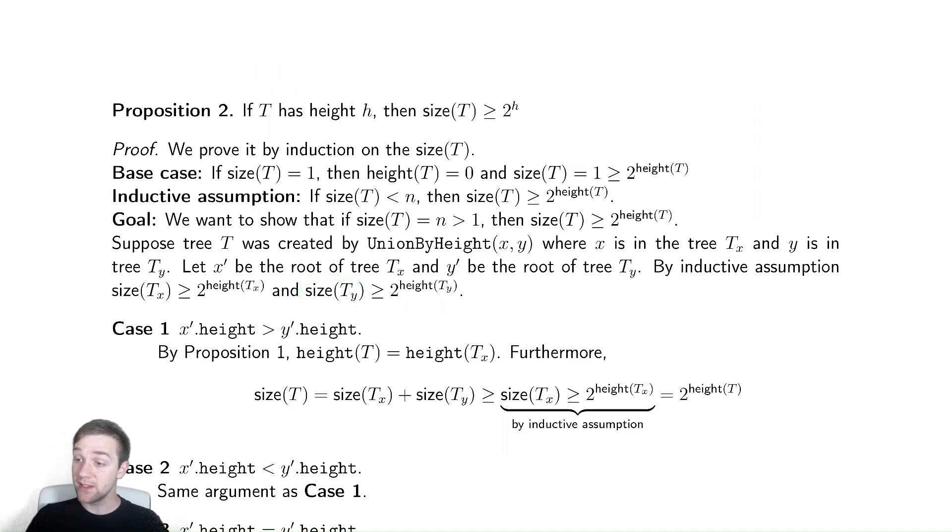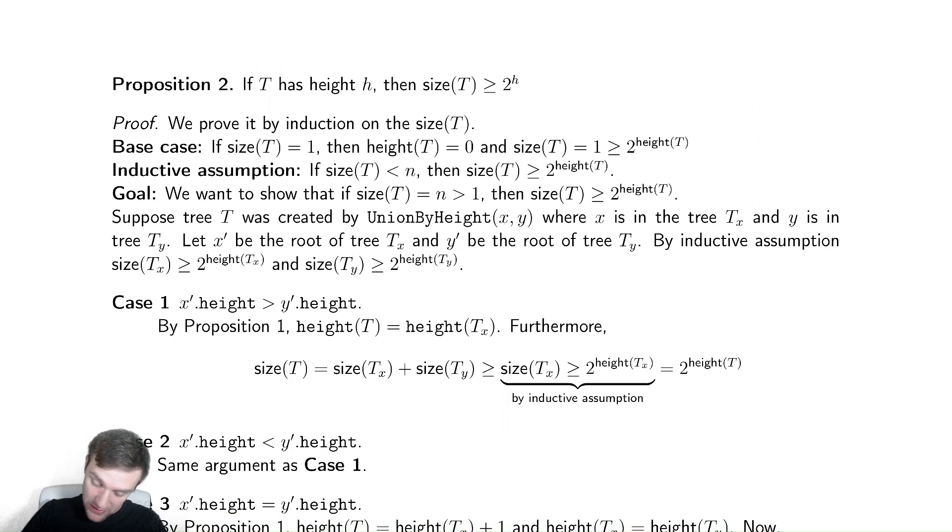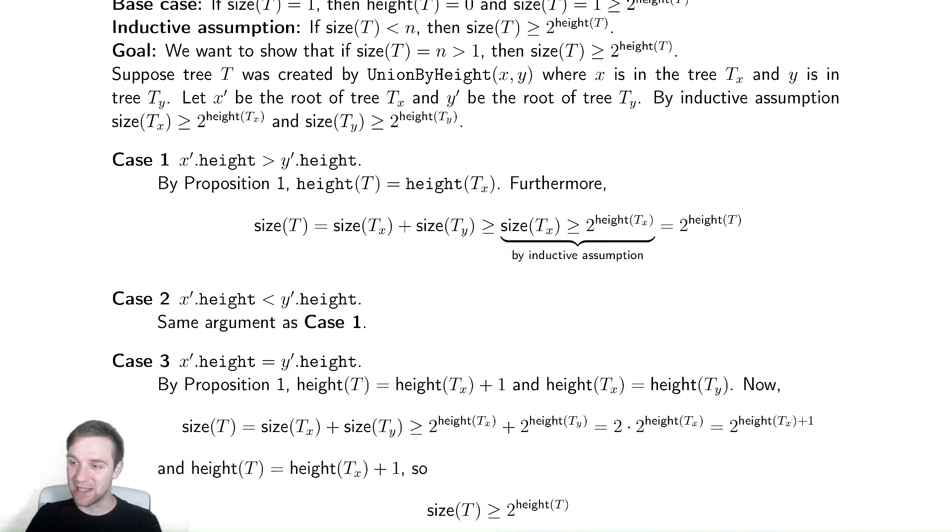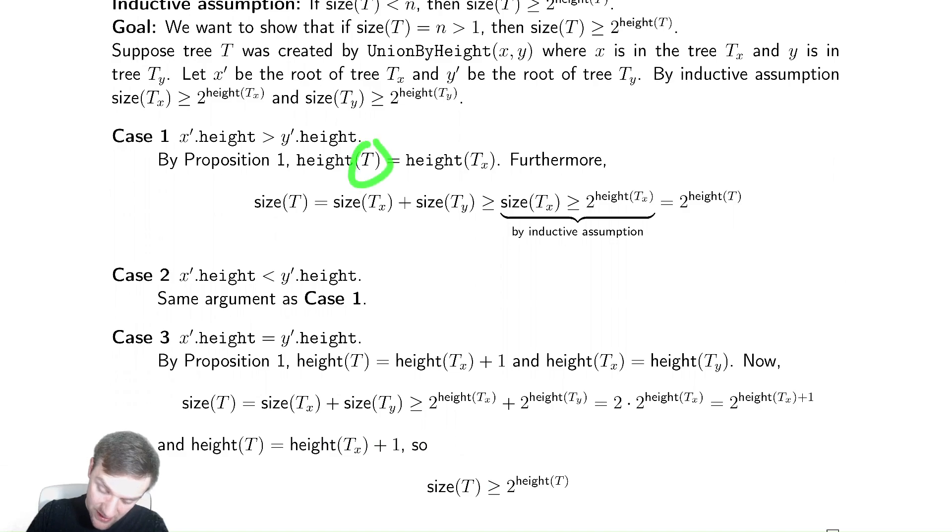And then we're just claiming what the inductive assumption is for this tree t, which is built by unioning x and y together, exactly the same setup. We're just replacing that x prime dot height equals height of tx with the size of tx greater than or equal to 2 to the height of tx. In case one, let's see what we have.